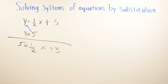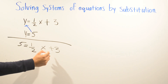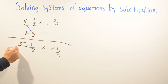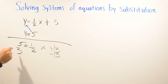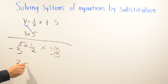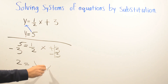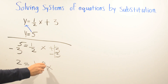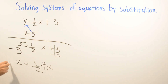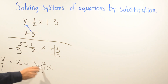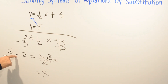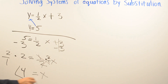Once we do that, it becomes like a two-step equation. We get rid of the positive three by subtracting three from both sides, so five minus three gives us two equals one half x. To get rid of the one half, we multiply both sides by two over one, which cancels it and leaves x by itself. Two times two equals four.